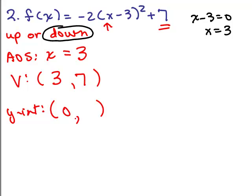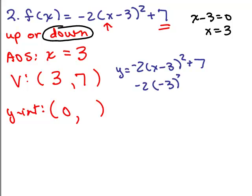What about the y-intercept? You put in 0 for x. So we take the equation negative 2 times (x minus 3) squared plus 7. If you put in 0 for x, that's negative 2 times negative 3 squared plus 7, which is negative 2 times 9 plus 7, and that gives you negative 11. So the y-intercept here would be (0, negative 11).